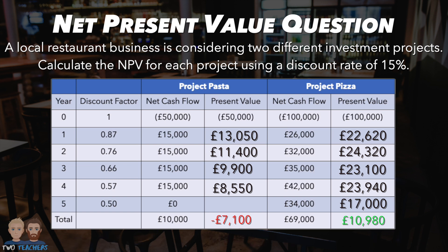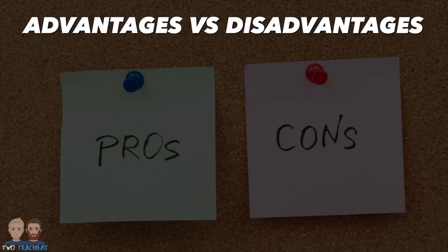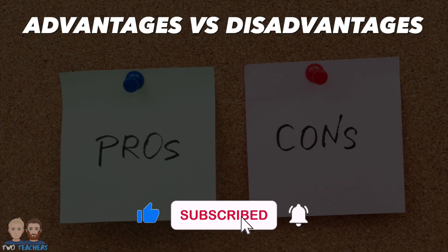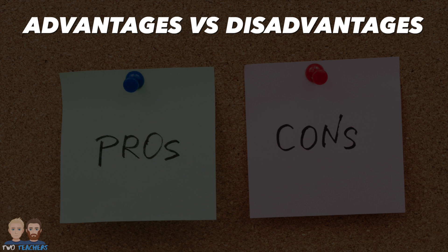Based on the calculations, the net present value for Project Pasta is £7,100, suggesting that the project's present value of cash inflows exceeds the initial investment and represents a viable option. The net present value for Project Pizza is £10,980, indicating that its present value of cash inflows exceeds the initial investment by an even greater margin — making it the better option for the local restaurant business. Hopefully you're now gaining a good understanding of what net present value is and how it is calculated.